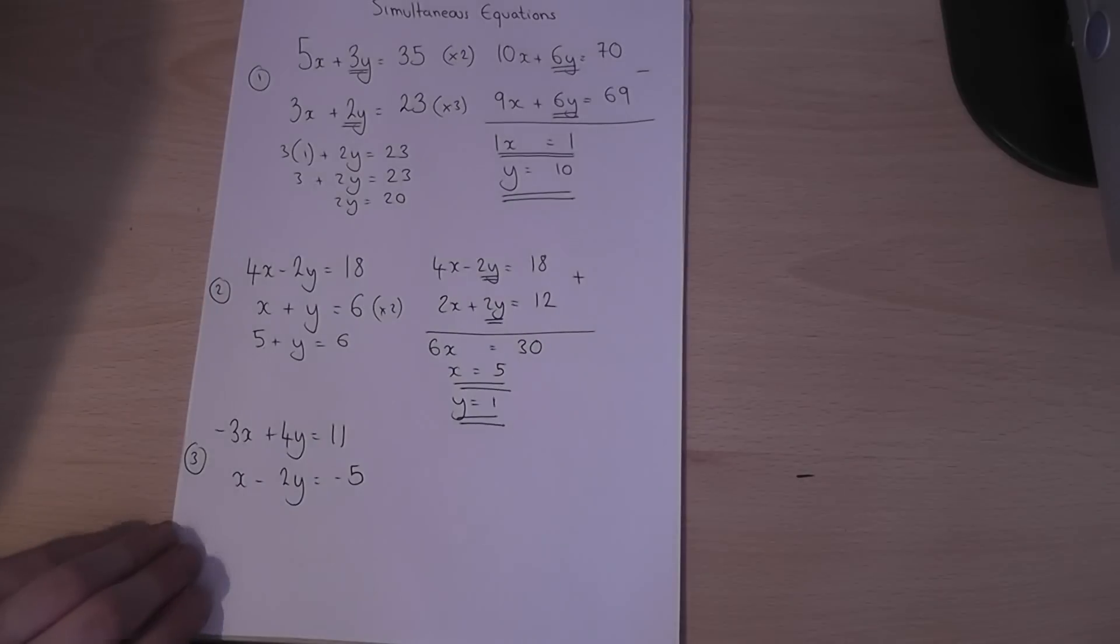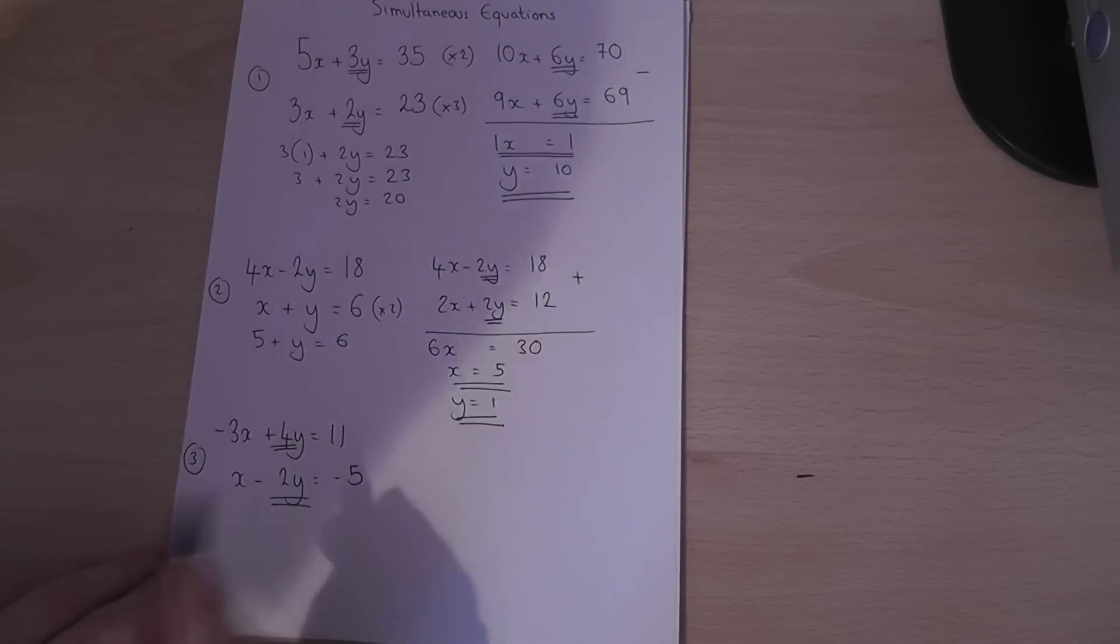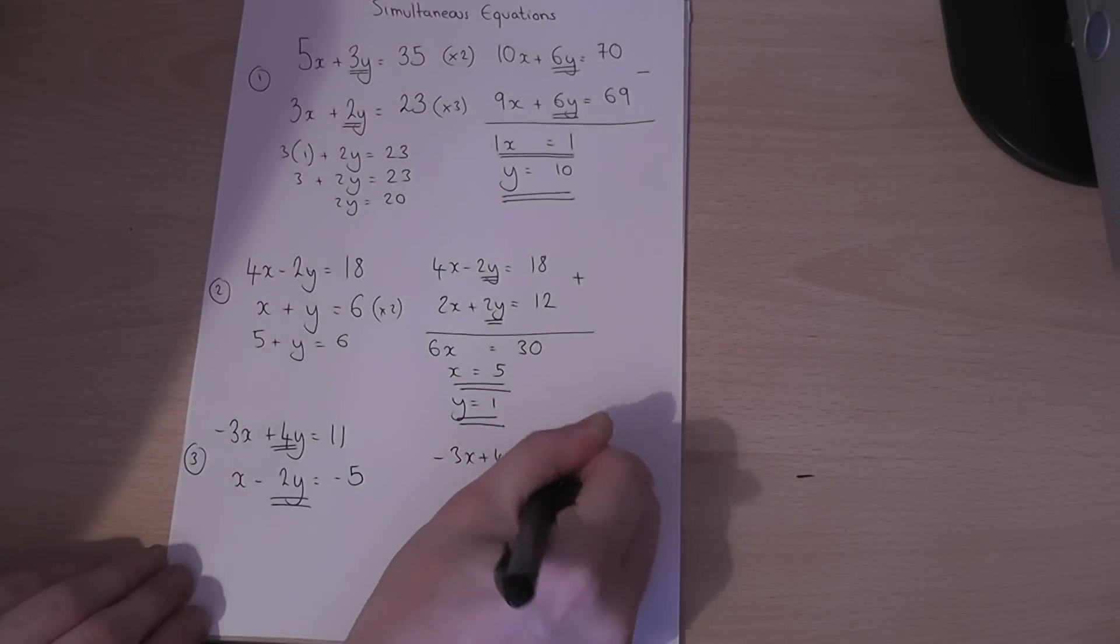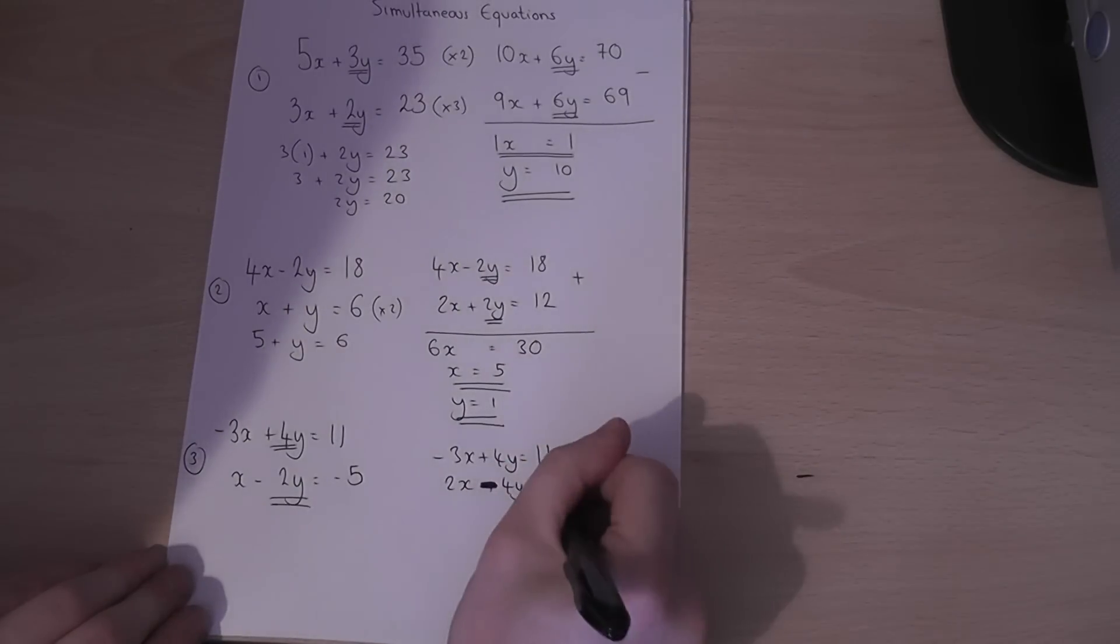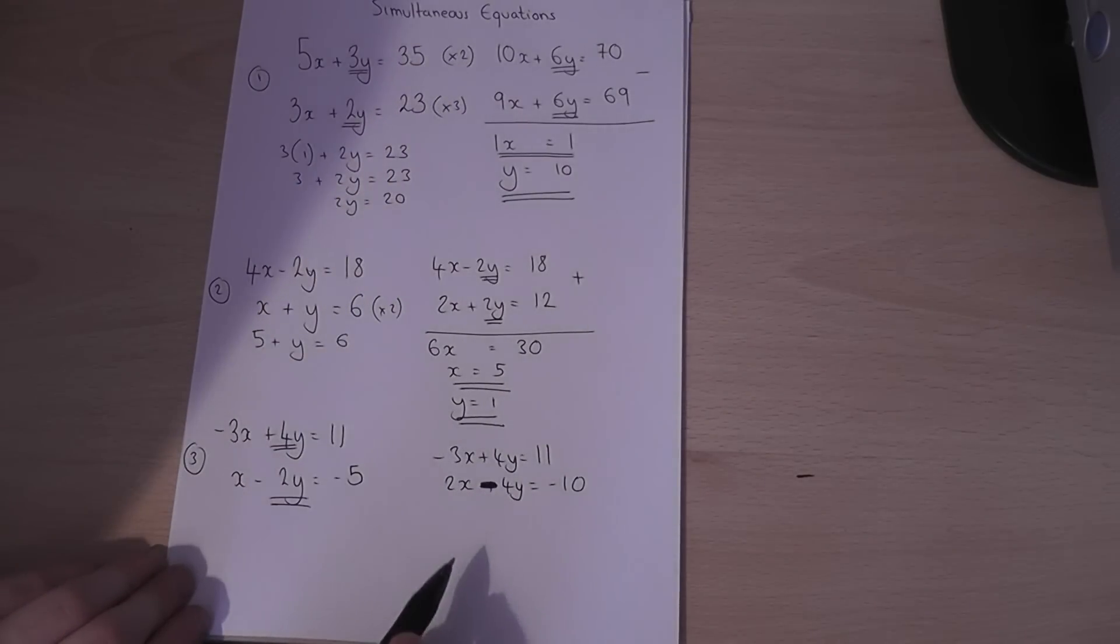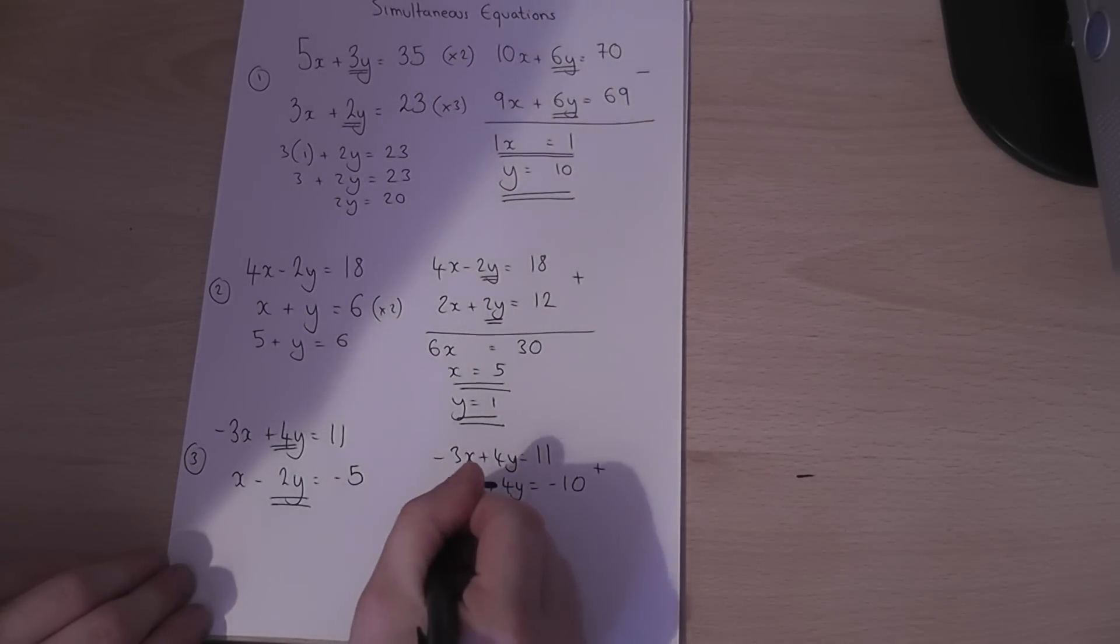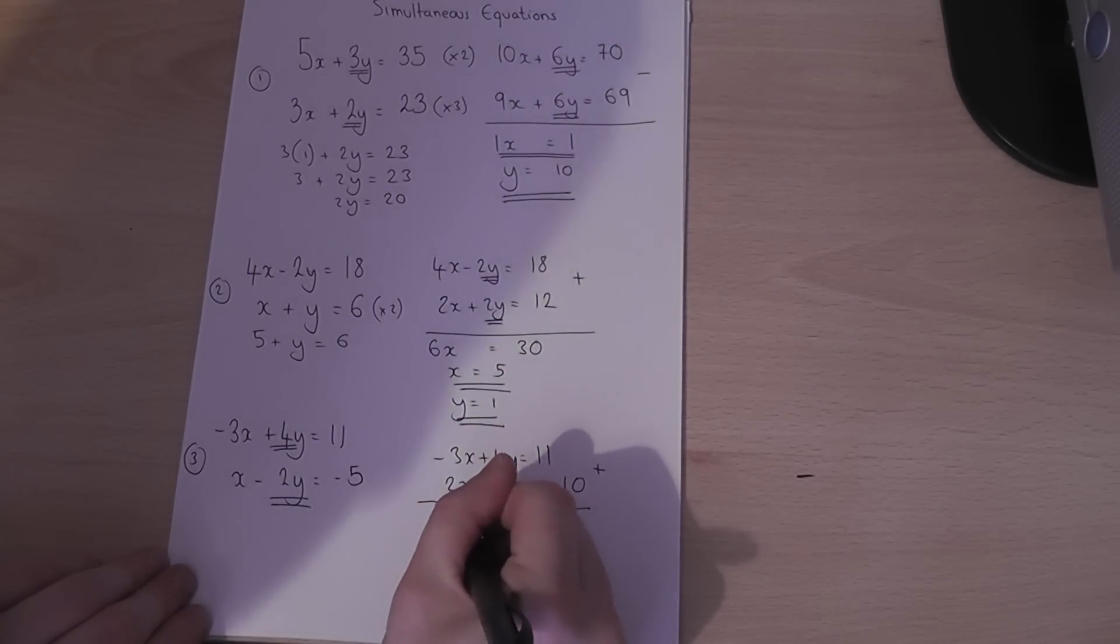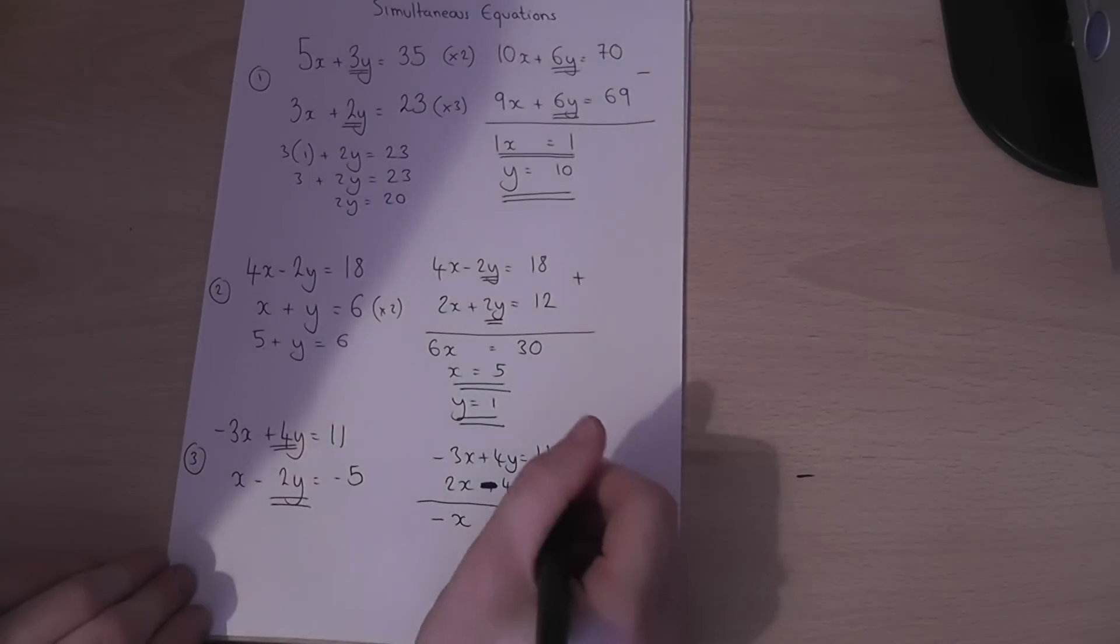And in the final one, even more negatives, but again focus on the y's. If I double the bottom equation I will get 4y which will balance off the four y above. So I will keep this equation the same. I will double the bottom equation minus 10. The signs are different but I've got 4y in both equations. Now when the signs are different we have to add together the equations to make them balance off. I must be very careful here. Now minus 3x plus 2x is minus 1x. 4y and a minus 4y cancels and 11 take away 10 is 1.